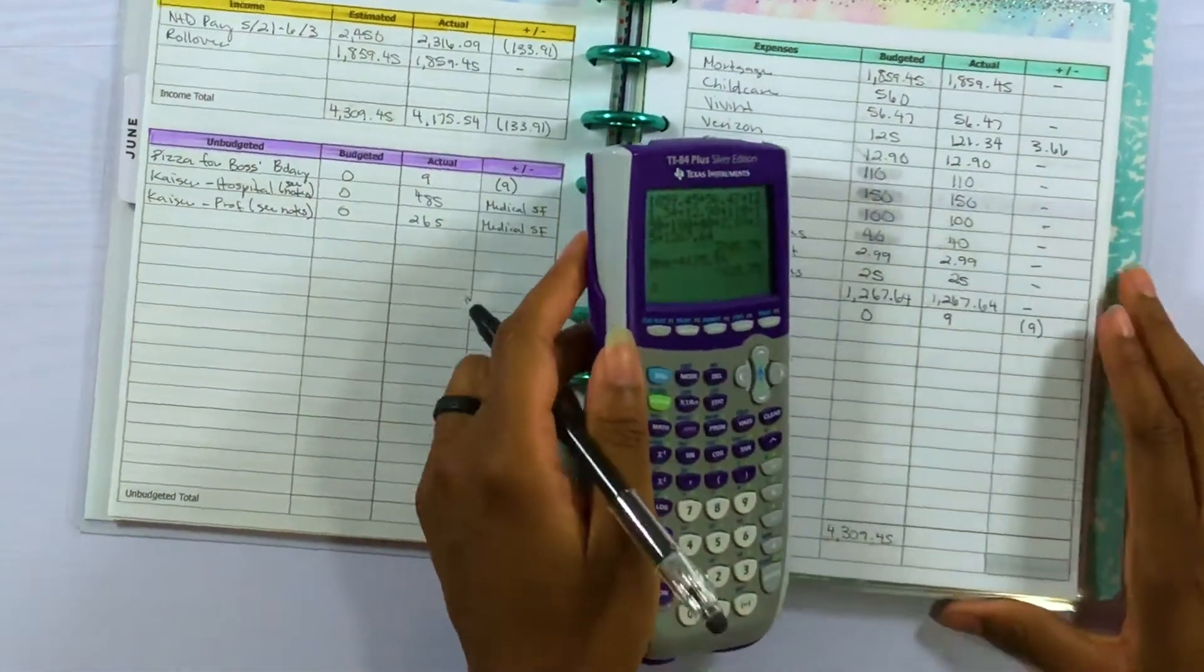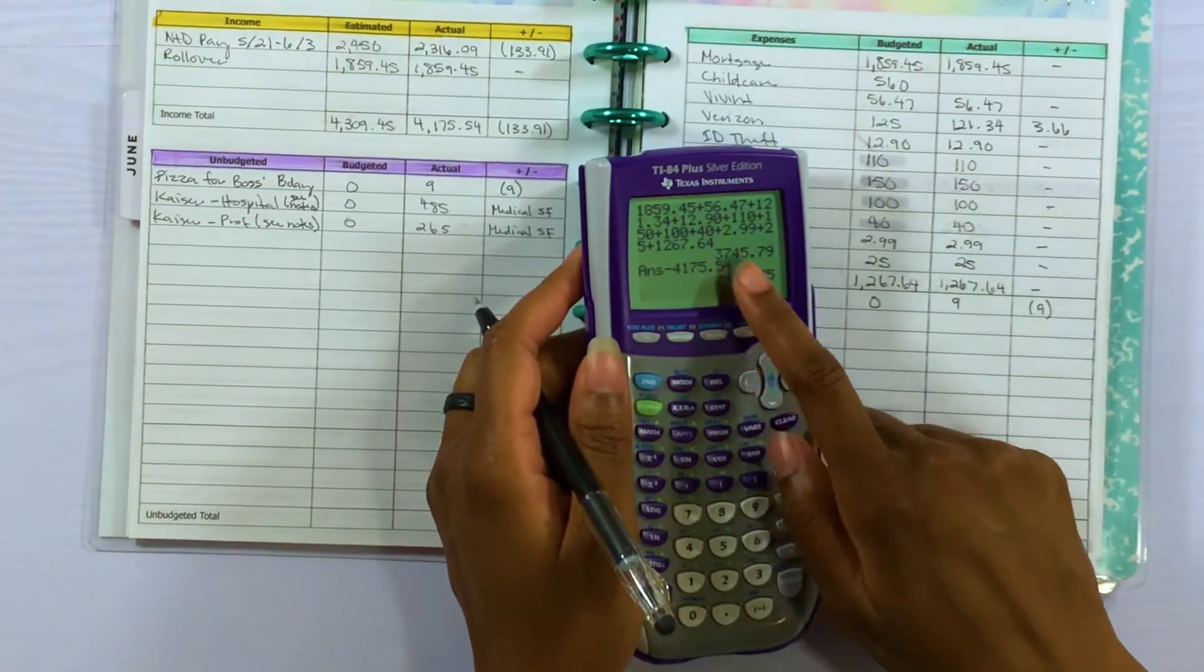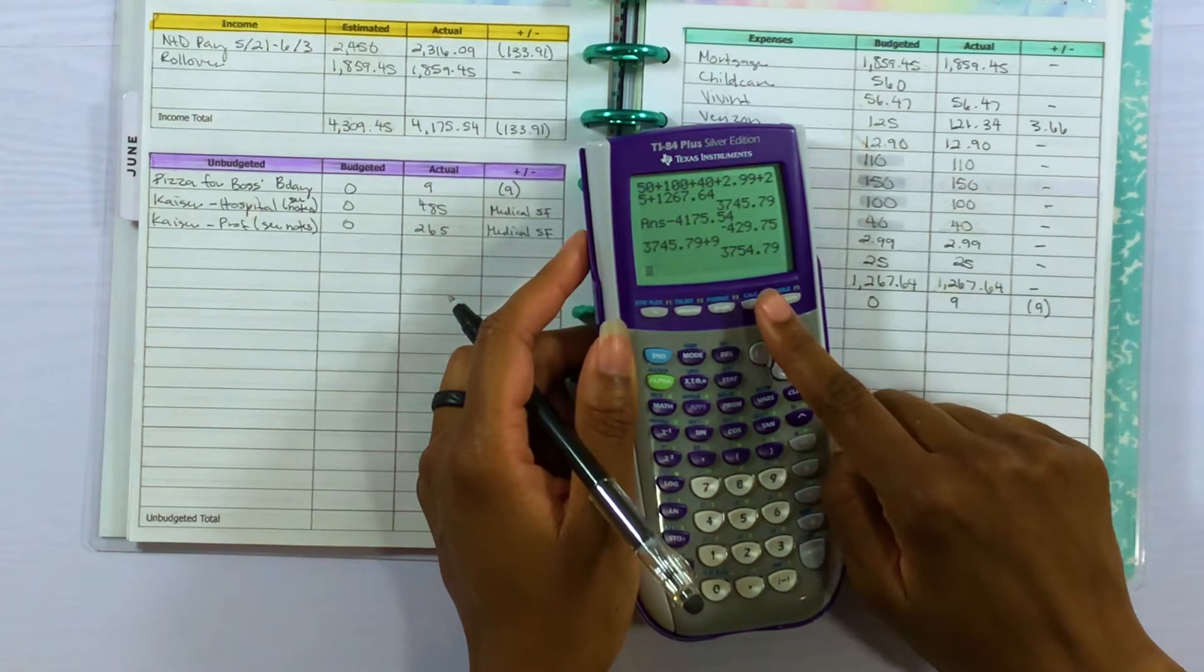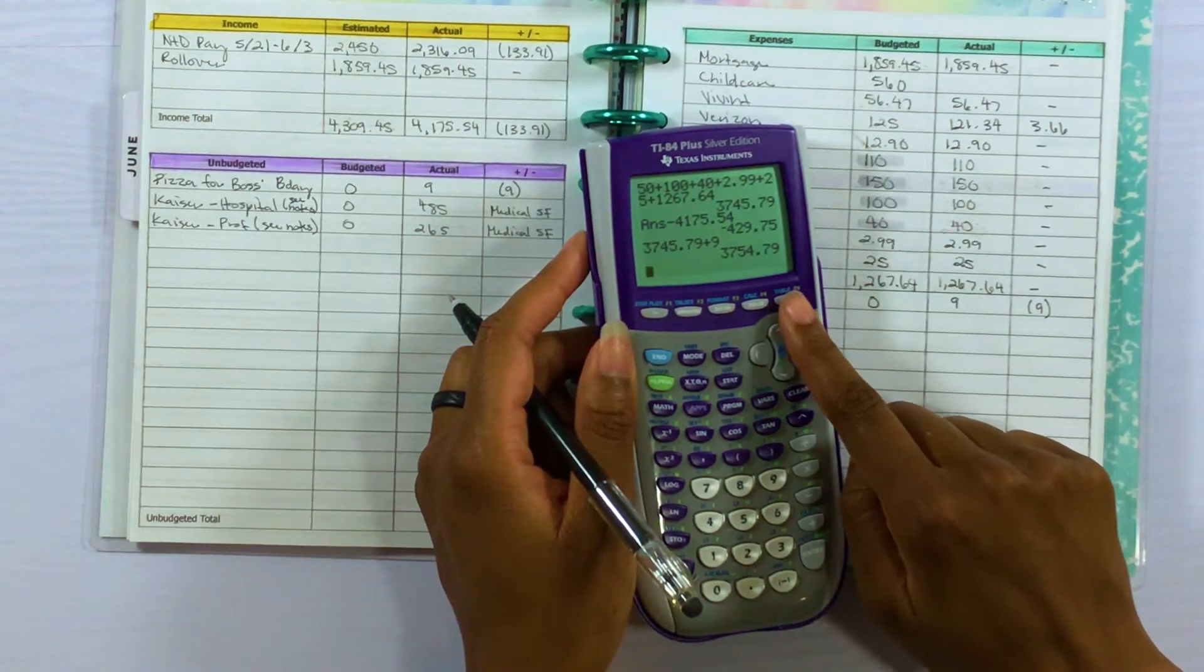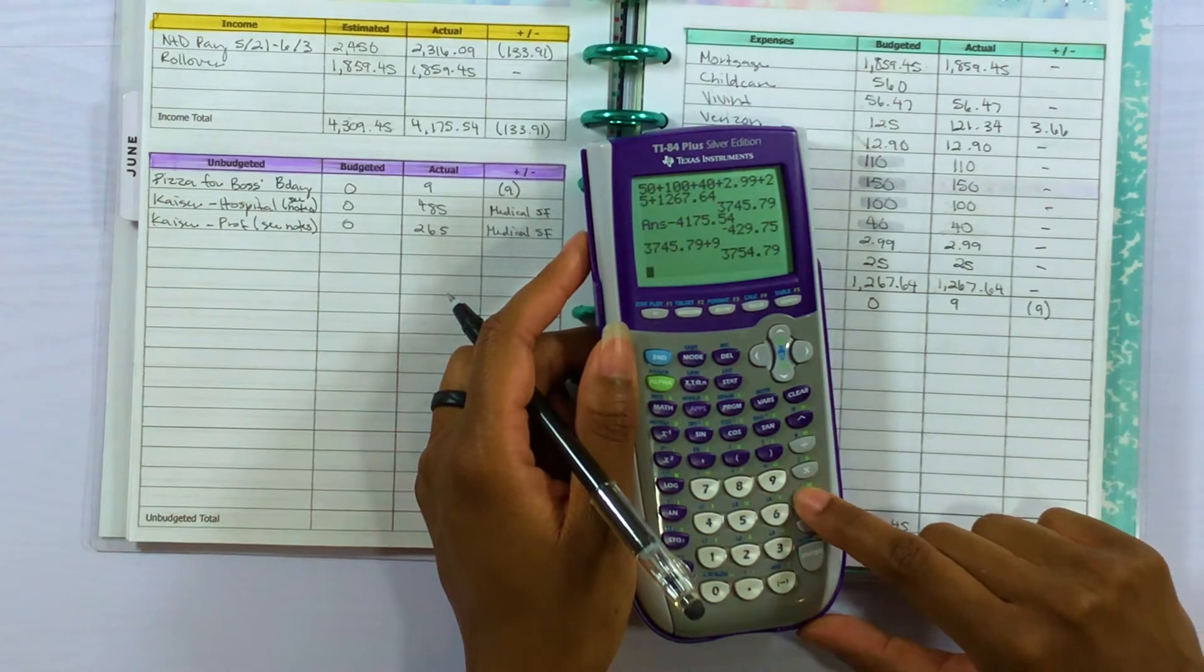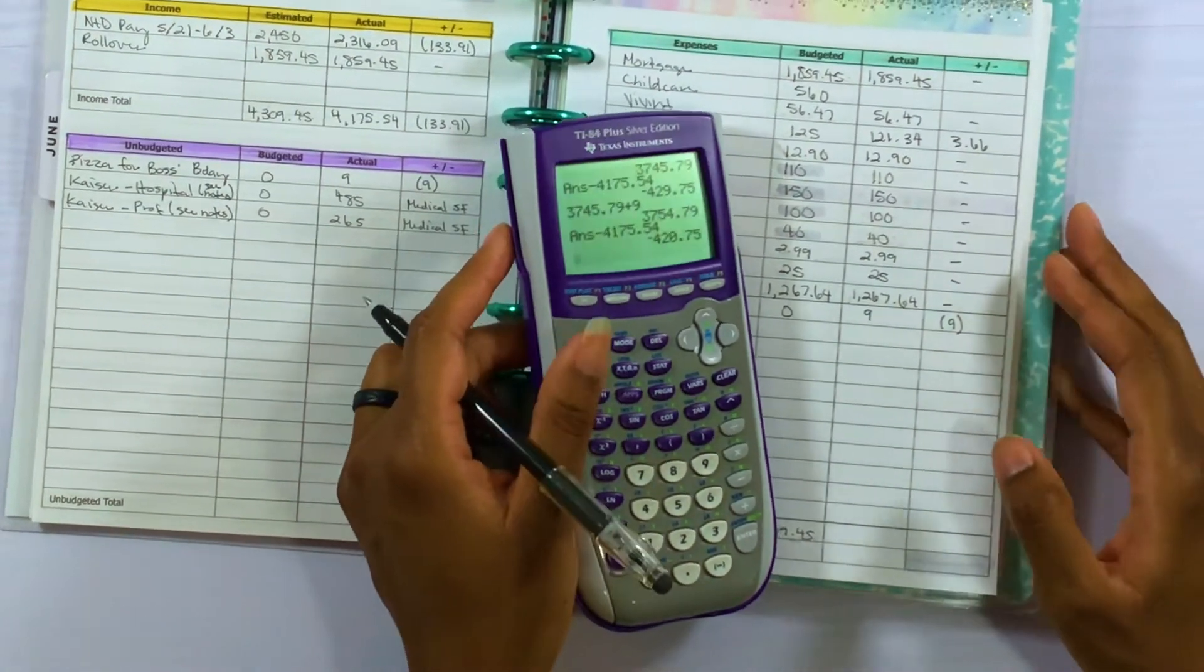So let me go ahead and add $9 to the expenses total from before, so it's $3,754.79 is what we spent. So let me back that out from the income. Okay, so that's $420.75.